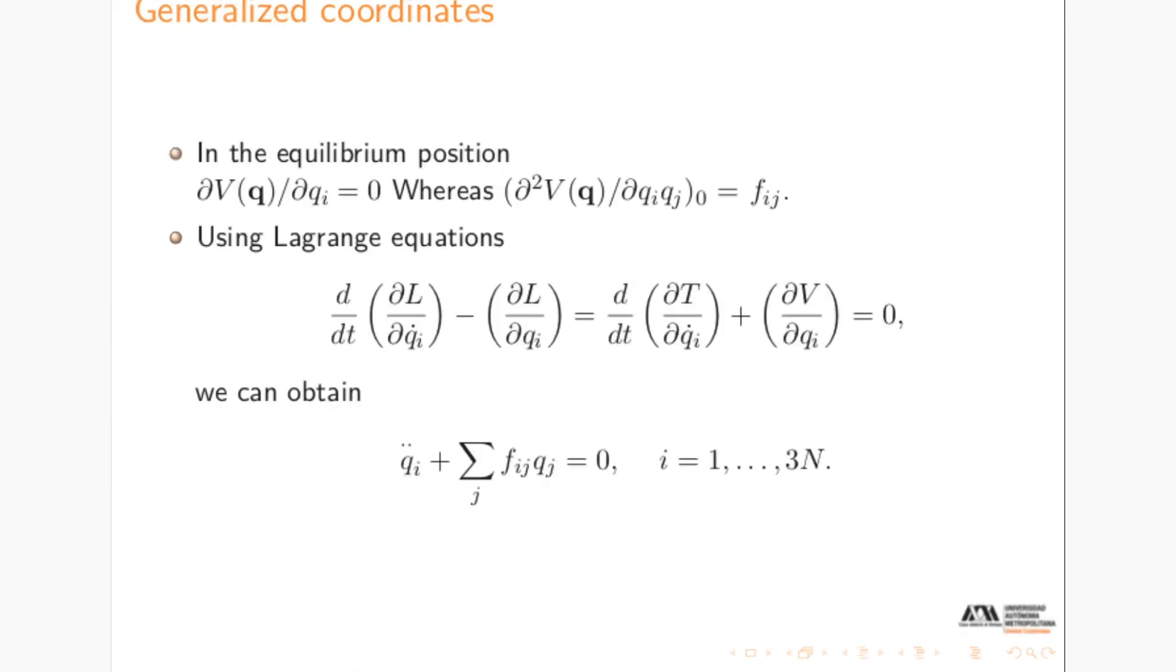Once you have the kinetic and the potential energy of the molecule, you can use the Lagrange equations in order to arrive to the equations of motion of the molecule. And using these Lagrange equations, you arrive to a set of coupled equations that you need to solve in order to find the solutions.